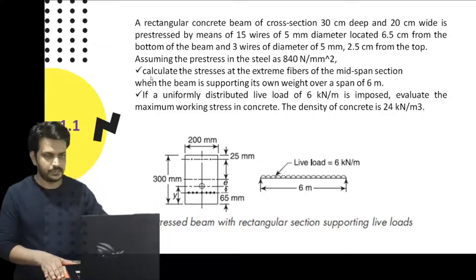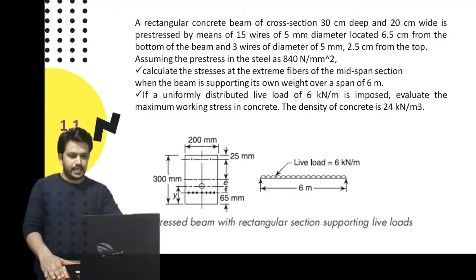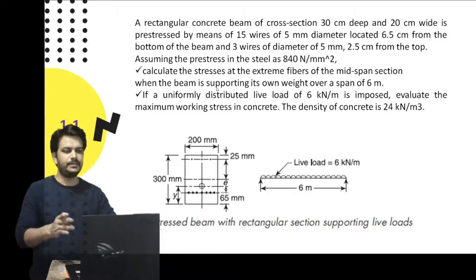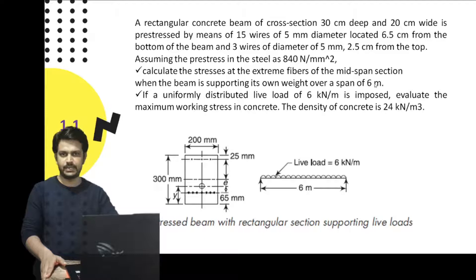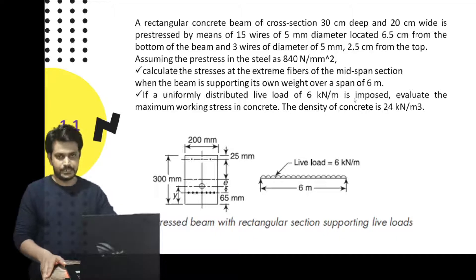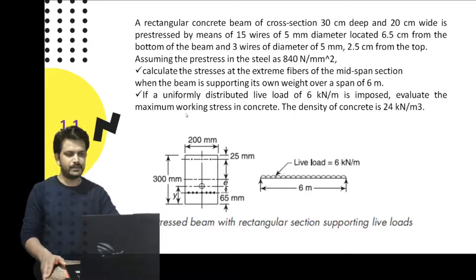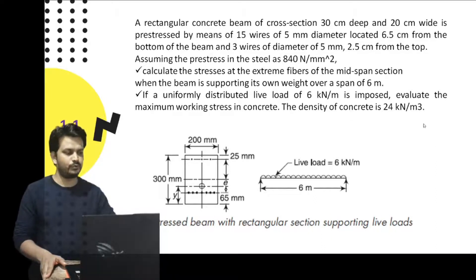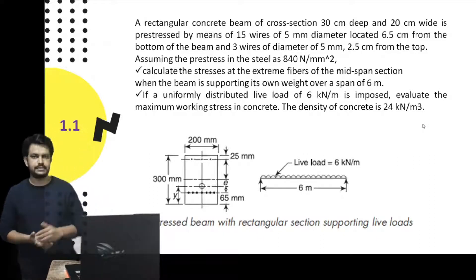Calculate: first, the stresses at the extreme fibers of the mid-span section when the beam is supporting its own weight over a span of 6 meters. Second, if a uniformly distributed live load of 6 kN/m is imposed on the beam, evaluate the maximum working stress in concrete. The density of concrete is assumed to be 24 kN/m³.